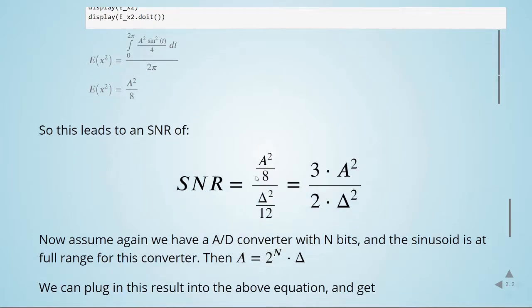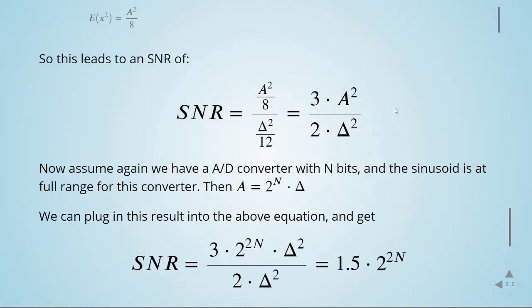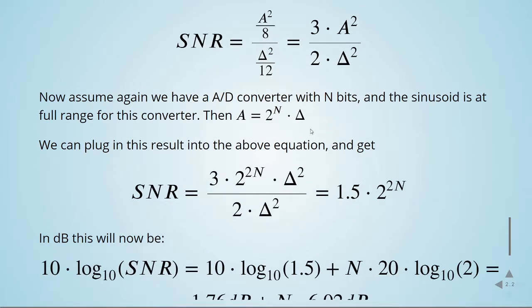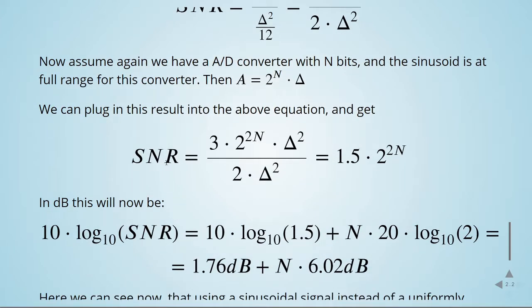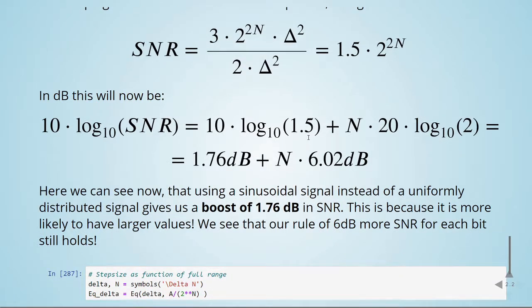This leads to a signal-to-noise ratio of (a²/8) divided by (step size² / 12), which is the signal power divided by the noise power. The SNR simplifies to 3a² divided by (2 × step size²). If we consider the sinusoid at full range, the amplitude a equals 2 to the power of n times the step size. Substituting, the SNR becomes 1.5 times 2 to the power of 2n, which in dB gives n times 6.02 dB plus a boost of 1.76 dB for a sine wave.